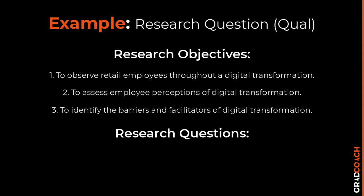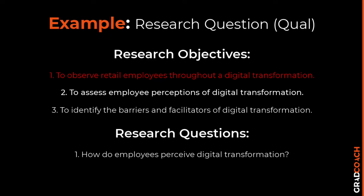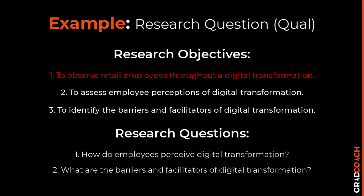In our qualitative example of employee experiences of digital transformation in retail HR, the first objective was to observe the retail HR employees throughout the digital transformation. There's not really a research question that can come from this objective, because this objective represents a step along the way to answering other research questions — there's not a question to answer for it. However, for the second objective about employee perceptions, a research question could be: 'how do employees perceive digital transformation in retail HR?' And for the third objective about barriers and facilitators, the question might be: 'what are the barriers and facilitators of digital transformation in retail HR?'